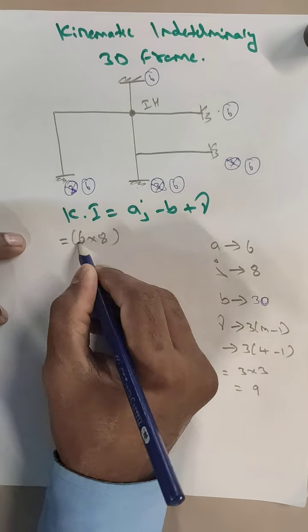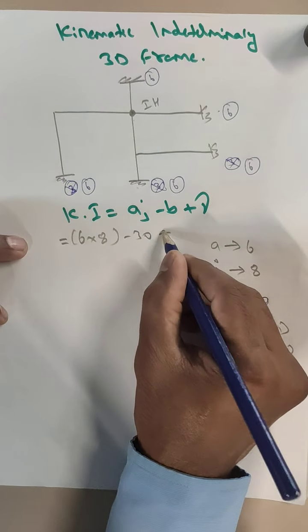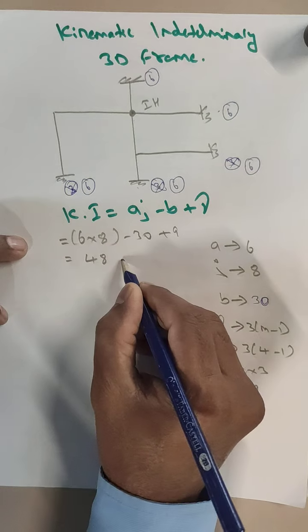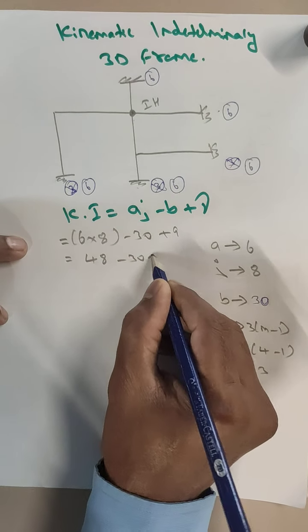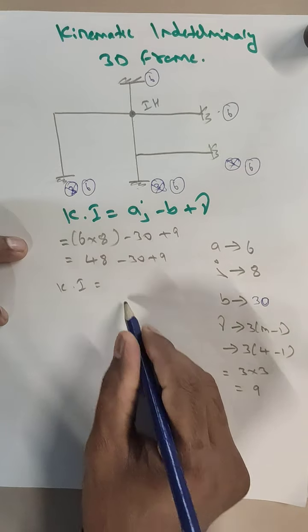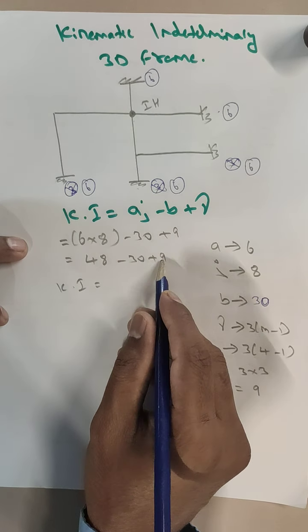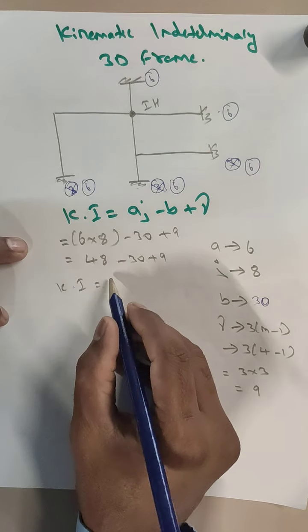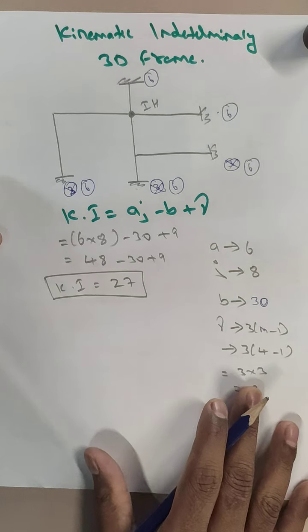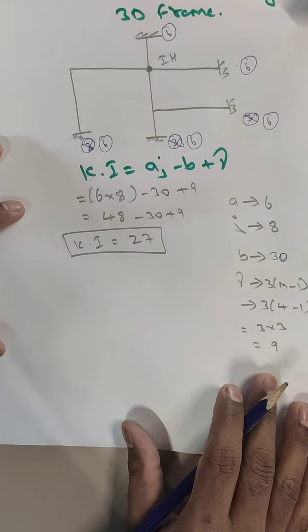Substituting into the formula: KI = 6 × 8 - 30 + 9 = 48 - 30 + 9 = 27. So the kinematic indeterminacy is equal to 27.